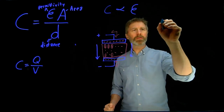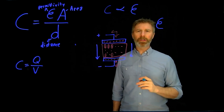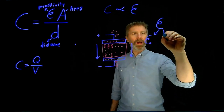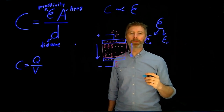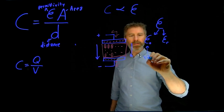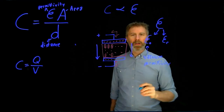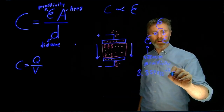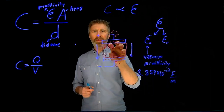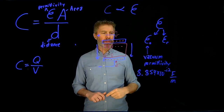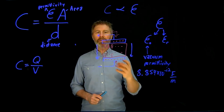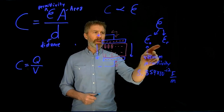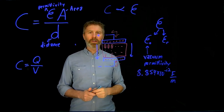A couple more things to note about permittivity. Permittivity is given as a single number, but quite often we think about it in terms of two different numbers: epsilon naught, which is the base permittivity, and epsilon r, which is the relative permittivity. Epsilon naught is called the vacuum permittivity, or sometimes the permittivity of free space, and it's equal to 8.854 times 10 to the minus 12 farads per meter. So if the material in between was simply a vacuum, then the permittivity would be epsilon naught. However, if the material inside is some other kind of dielectric, the epsilon r is going to increase the value. Epsilon r is the relative multiplier.